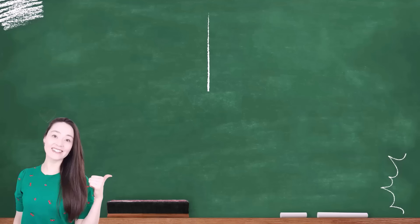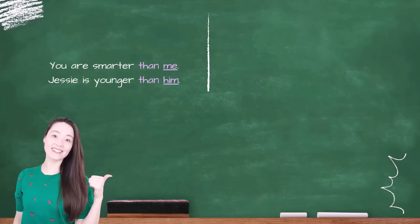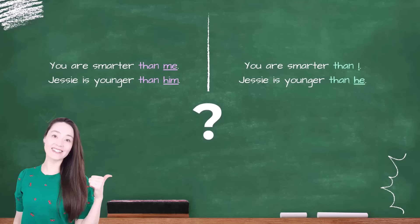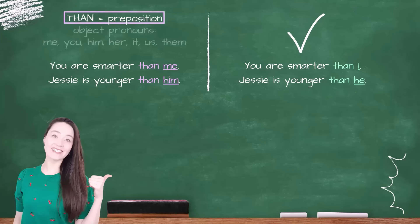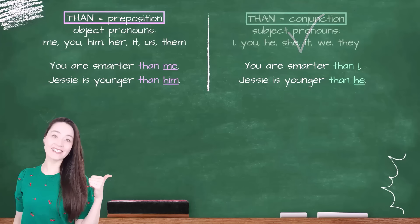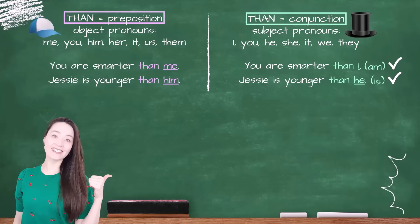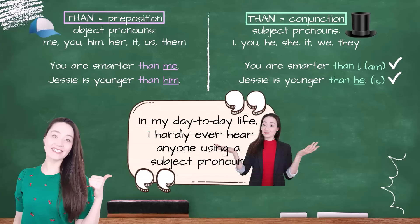We need to get into the nitty gritty of the grammar. You are smarter than me — Jesse is younger than him. Or: you are smarter than I, Jesse is younger than he. They are both correct. If you consider 'than' a preposition, we use an object pronoun: me, you, him, her, it, us, them. If you consider 'than' a conjunction, we need a subject pronoun — I, you, he, she, it, we, they — and the verb that follows is often given: 'You are smarter than I am,' 'Jesse is younger than he is.' It doesn't matter which pronoun you use — your sentences mean the same thing. Using an object pronoun is more common and less formal; using a subject pronoun is less common and more formal. In my day-to-day life, I hardly ever hear anyone using a subject pronoun.